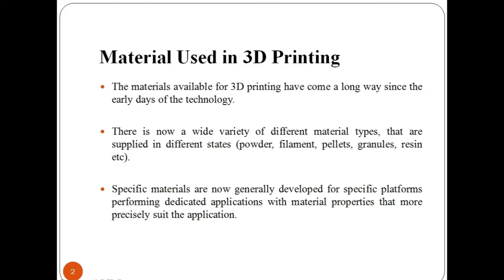The materials available for 3D printing have come a long way since the early days of the technology. There is now a wide variety of different material types that are supplied in different states — i.e., powder, filament, pellets, granules, resin, etc. Specific materials are now generally decided and developed for specific platforms performing dedicated applications.